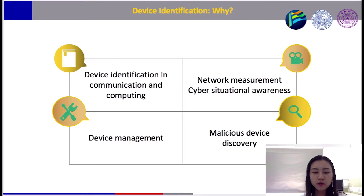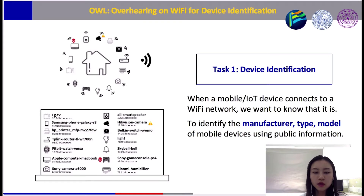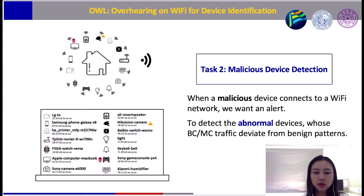In this paper, we focus on the problem of device identification. This has been an important and challenging problem in network measurement, device management, cyber situational awareness, and many other applications. In a wireless network, it is essential for system administrators to identify connected devices and manage those devices accordingly. The first task is to identify the manufacturer, type, and model of devices connected to a Wi-Fi network. Our second task is to detect malicious or abnormal devices whose network traffic deviates from baseline patterns.